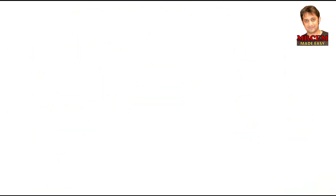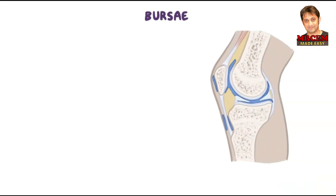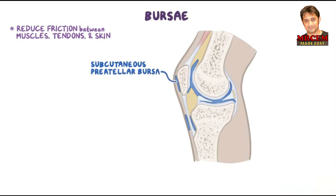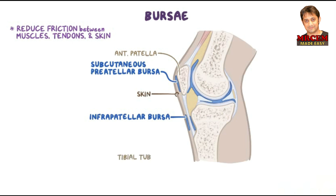There are also about 12 bursae around the knee, which are fluid-filled structures that help reduce friction between muscles, tendons, and skin during movement. The most important ones are the subcutaneous prepatellar bursa and infrapatellar bursa — located between the anterior patella and the skin, and between the skin and tibial tuberosity respectively — and the deep infrapatellar bursa, located between the anterior surface of the tibia and the patellar ligament.